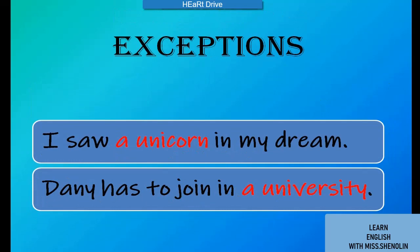Some exceptions are: 'I saw a unicorn in my dream.' 'Unicorn' starts with 'u,' which is a vowel, but it doesn't give a vowel sound — it is pronounced 'yu,' which gives a consonant sound. So we use 'a' before it.